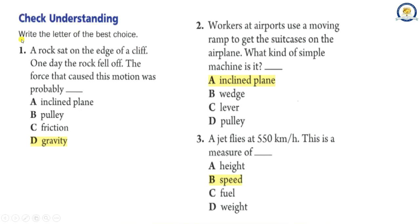Check understanding. Write the letter of the best choice. 1. A rock sat on the edge of a cliff. One day the rock fell off. The force that caused this motion was probably A. Incline plane B. Pulley C. Friction D. Gravity. The correct answer is D, Gravity.